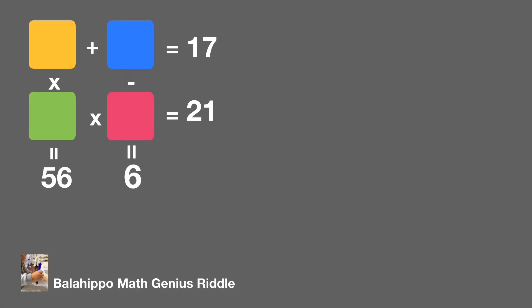At first, let's call the boxes. I'm going to call yellow box A, blue box B, green box P, and the pink box Q.